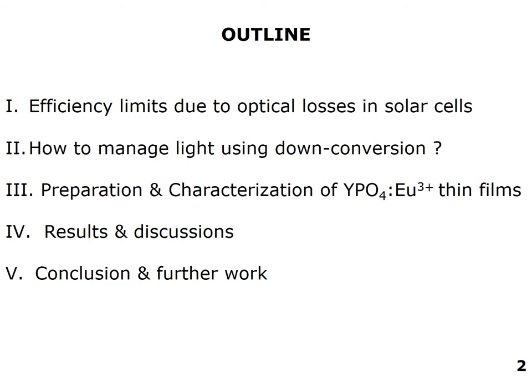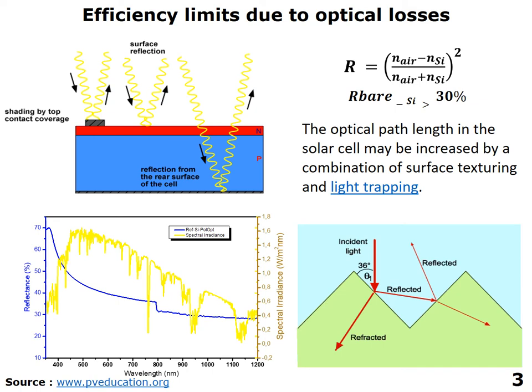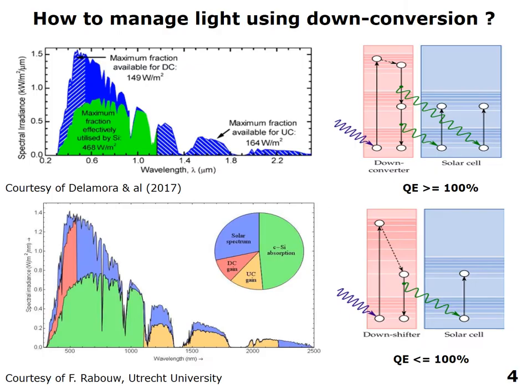Outlining my presentation, I am going to go through it point by point. As you may know, one of the major problems for the efficiency of solar cells is the optical losses and light reflections. Researchers have developed solutions like light-trapping systems to increase light absorption, and also analyzing light using conversion materials like down-conversion — splitting the solar spectrum in the UV region and converting it to the visible red region.